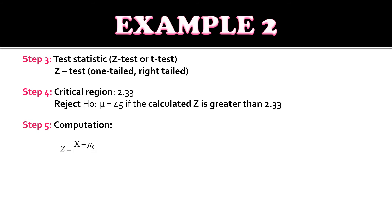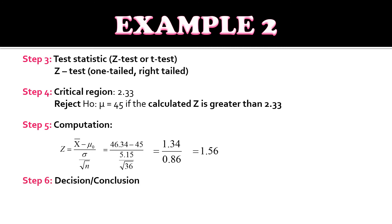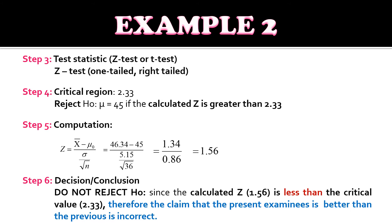For step five, we compute by substituting the values into the formula: 46.34 minus 45, divided by 5.15 over the square root of 36, which gives us 1.56. Comparing the computed Z of 1.56 to the critical value of 2.33, we do not reject the null hypothesis since 1.56 is less than 2.33. We therefore conclude that the claim that the present examinees are better than the previous is incorrect.